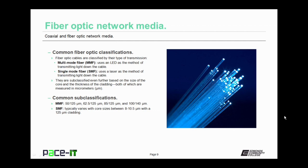Fiber optic cables are classified initially by their types of transmission. Those types are multimode fiber (MMF), which uses an LED as the method of transmitting light down the cable, and single mode fiber (SMF), which uses a laser diode to transmit light down the cable. These fiber optic cables are further subclassified based on the size of their core and the thickness of the cladding, both measured in micrometers.